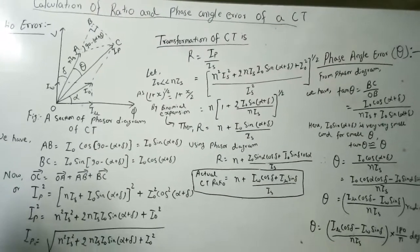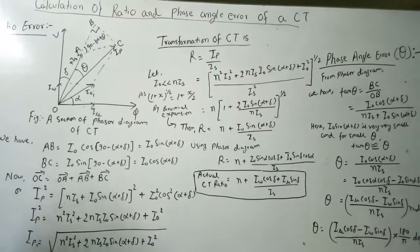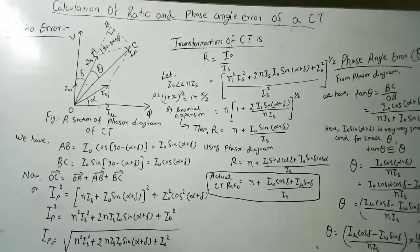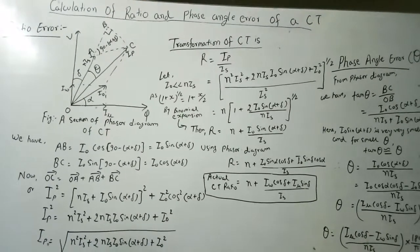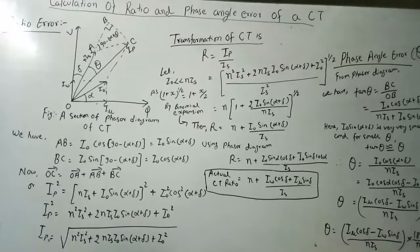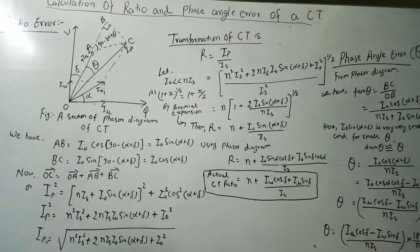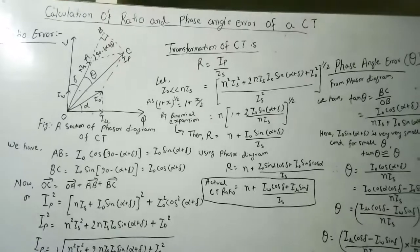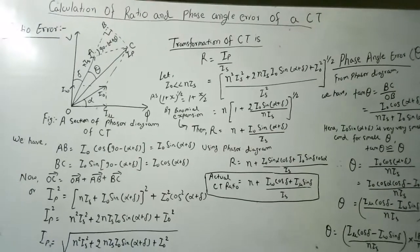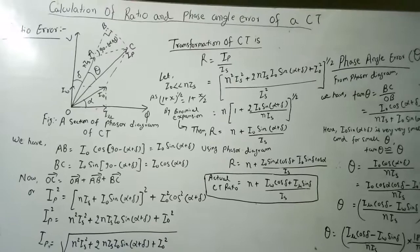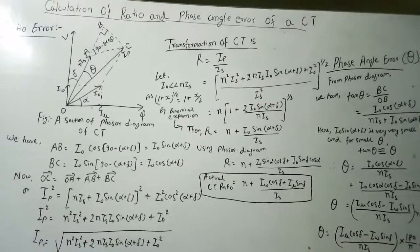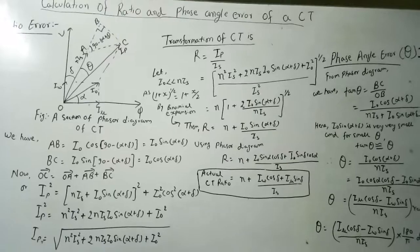In the last lecture, we also dealt with what is ratio error. It is the ratio of the difference between nominal ratio minus actual ratio, upon actual ratio. And phase angle error is defined as the angle by which the secondary current phasor, when reversed, differs in phase from the primary current.